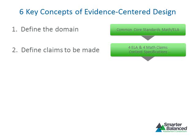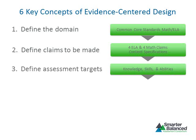Once the domain is defined and the claims to be made are defined, the third step is to clearly define the knowledge, skills, and abilities that form the domain. For Smarter Balanced, these are called assessment targets. An assessment target defines the specific knowledge, skill, or ability that students should be able to demonstrate within the domain. The content specifications define a large number of assessment targets that will be measured by the Smarter Balanced assessment system.